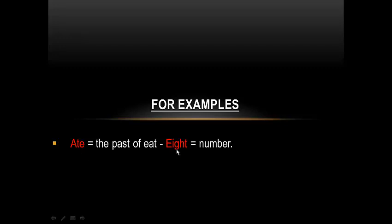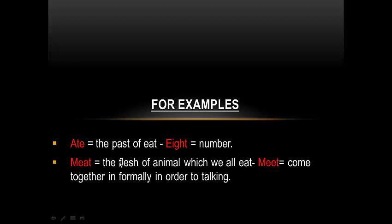The next example is 'meat' and 'meet.' They have the same sound and pronunciation but different meaning. 'Meat' number one is the flesh of an animal which we eat — for example, we can buy meat for cooking dinner. 'Meet' number two means to come together formally in order to talk or discuss something, like a project. For example, every Monday I have a meeting with my friends to talk about how to teach English.